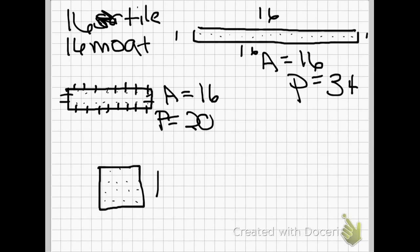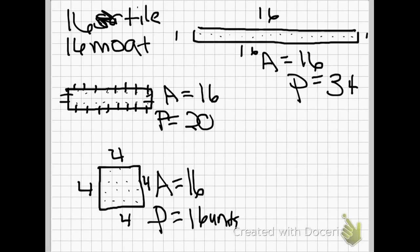Here I made a rectangle with an area of 16. It's 4 across and 4 down, which means this is 4 and this is 4. If I add up all sides, the perimeter would equal 16 units. So here is a kind of castle I can make. The area is 16 and the perimeter is 16. So my 16 moat squares could go around it.